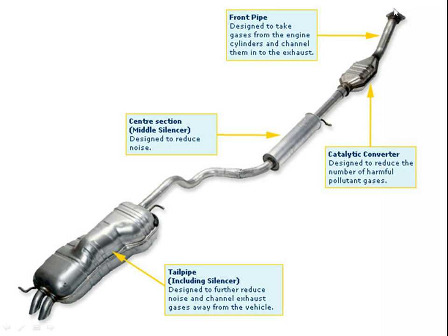This is the total system of exhaust. It shows the inlet of the exhaust, the front pipe, the catalytic converter which reduces the harmful and polluted gases. The system is also used for noise reduction. That is the exhaust system — the outlet of the exhaust is the tail pipe, which is also part of the noise reduction system.